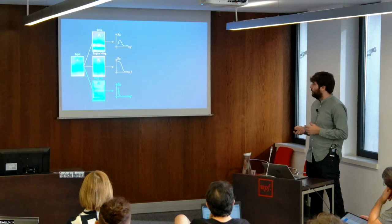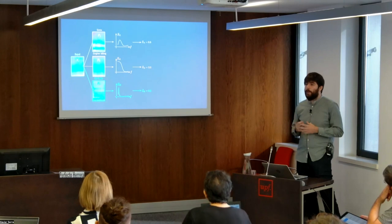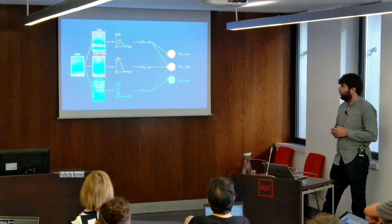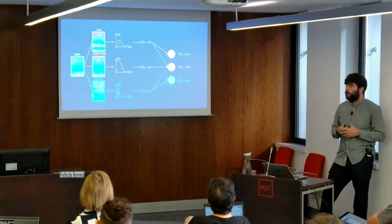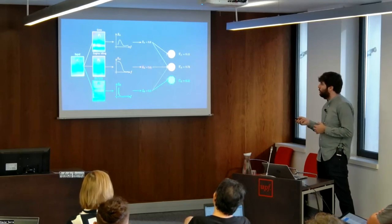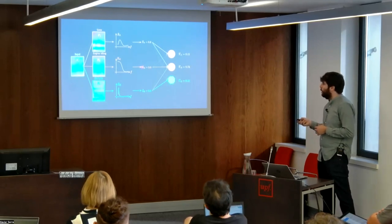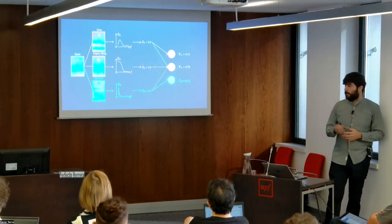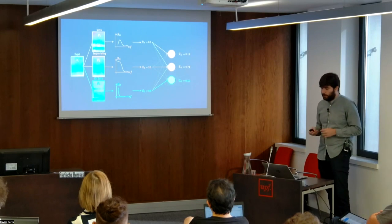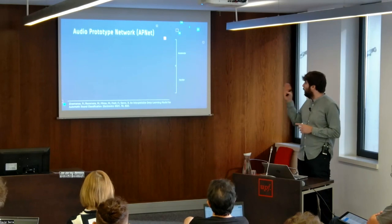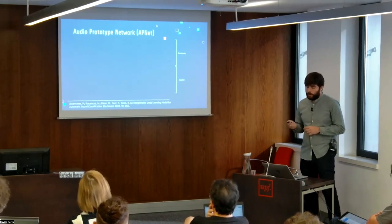We then integrate the frequency dimension of this similarity to get one value per prototype, and the similarity values are connected to the output using a fully connected layer. In this case, the input is more similar to the engine island prototype, so this value is higher and highly connected to the engine island output — that's why this instance is predicted as engine island. The Audio Prototype Network has two main components: an autoencoder and a classifier.